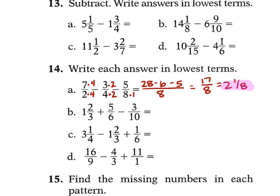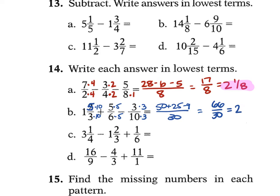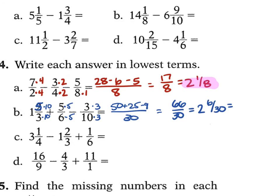For B, 1 and 2 thirds plus 5 over 6 minus 3 over 10: LCD is 30. Convert 1 and 2 thirds to 5 over 3, then multiply by 10 to get 50 over 30. The 5 over 6 becomes 25 over 30, and 3 over 10 becomes 9 over 30. So 50 plus 25 minus 9 is 66 over 30. The 30 goes into 66 twice with 6 left over, giving 2 and 1 fifth.